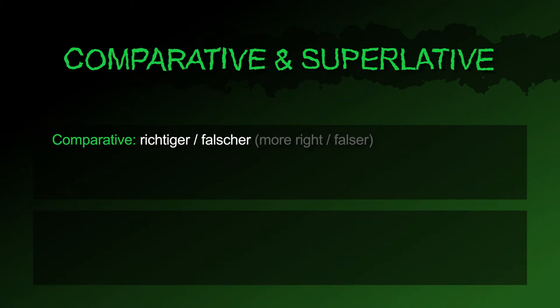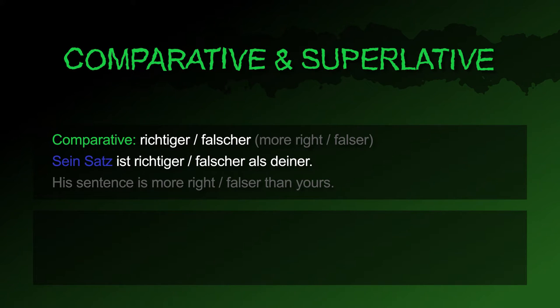Comparative: richtiger, falscher. Sein Satz ist richtiger als deiner. Sein Satz ist falscher als deiner.